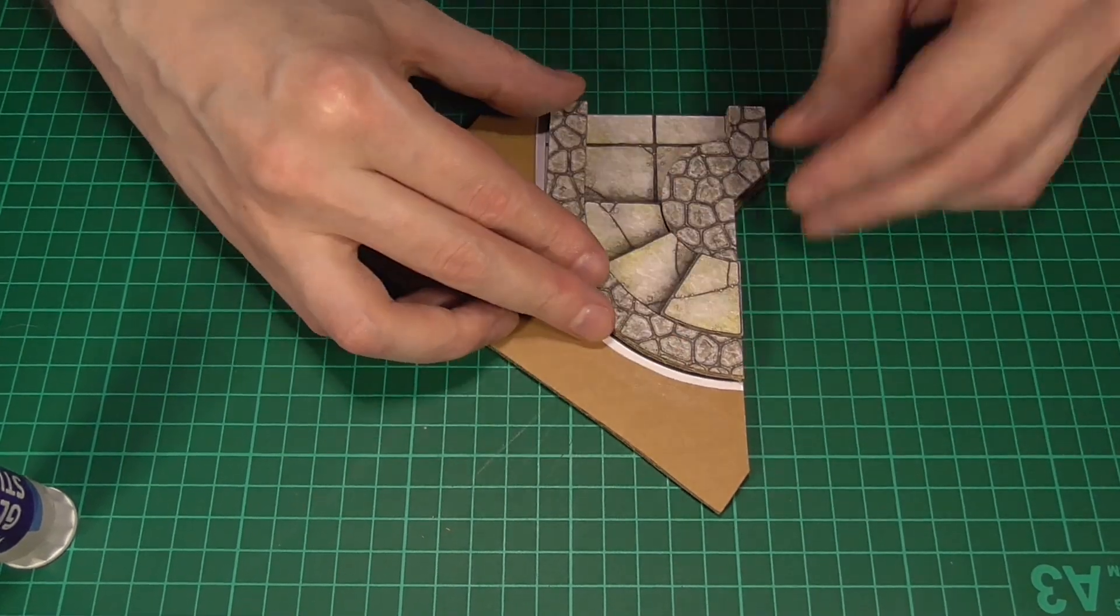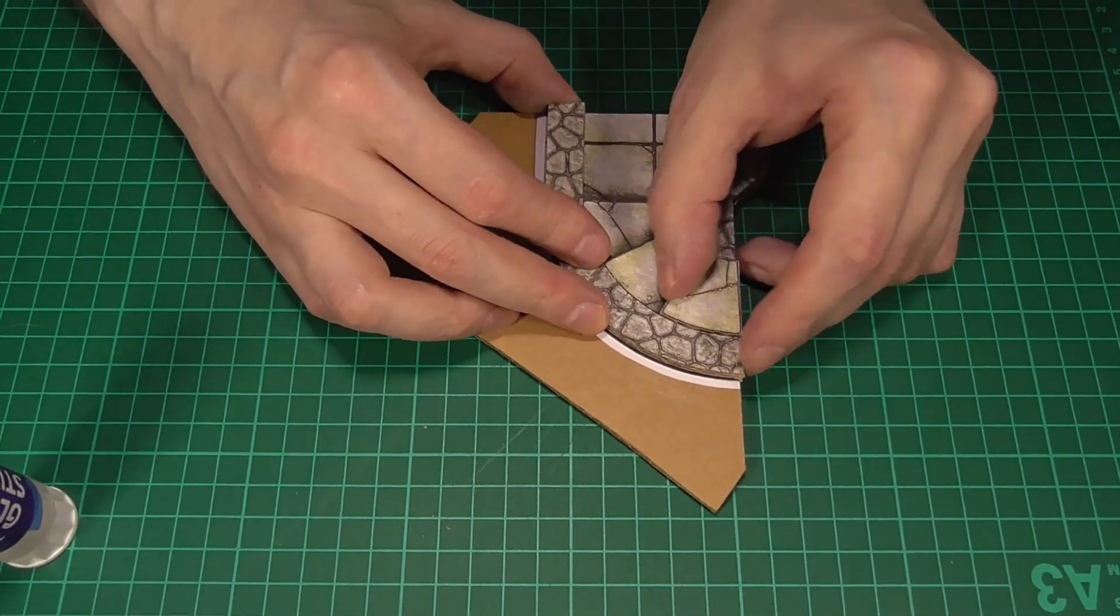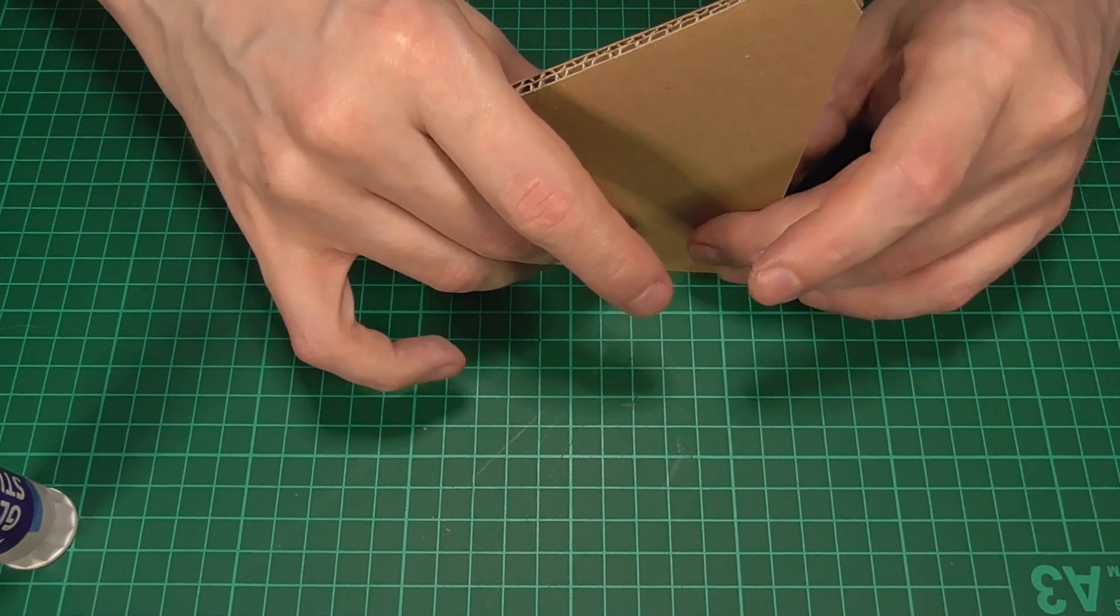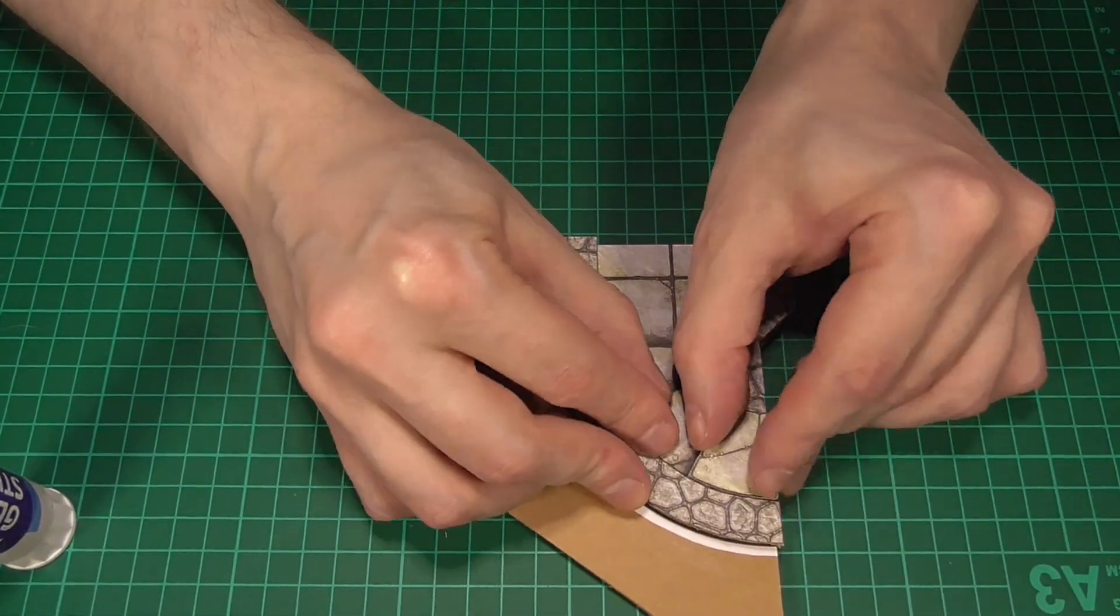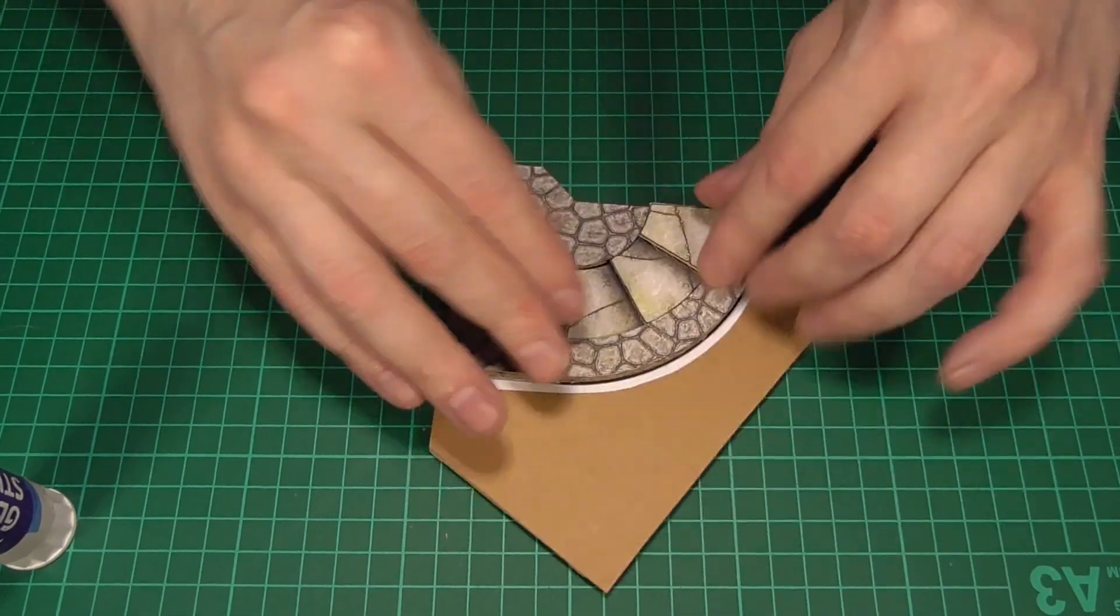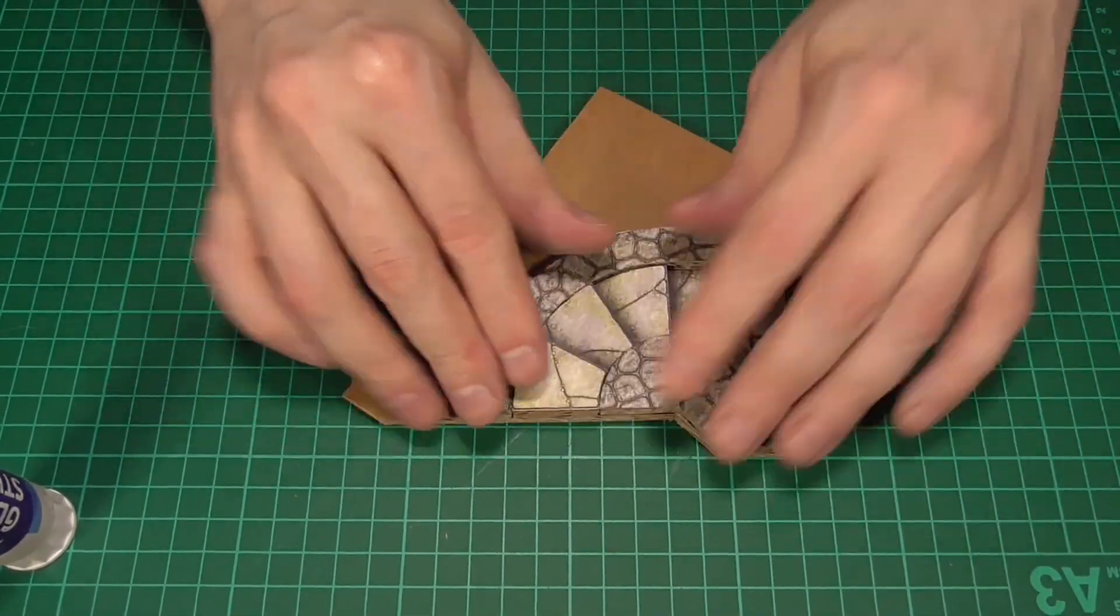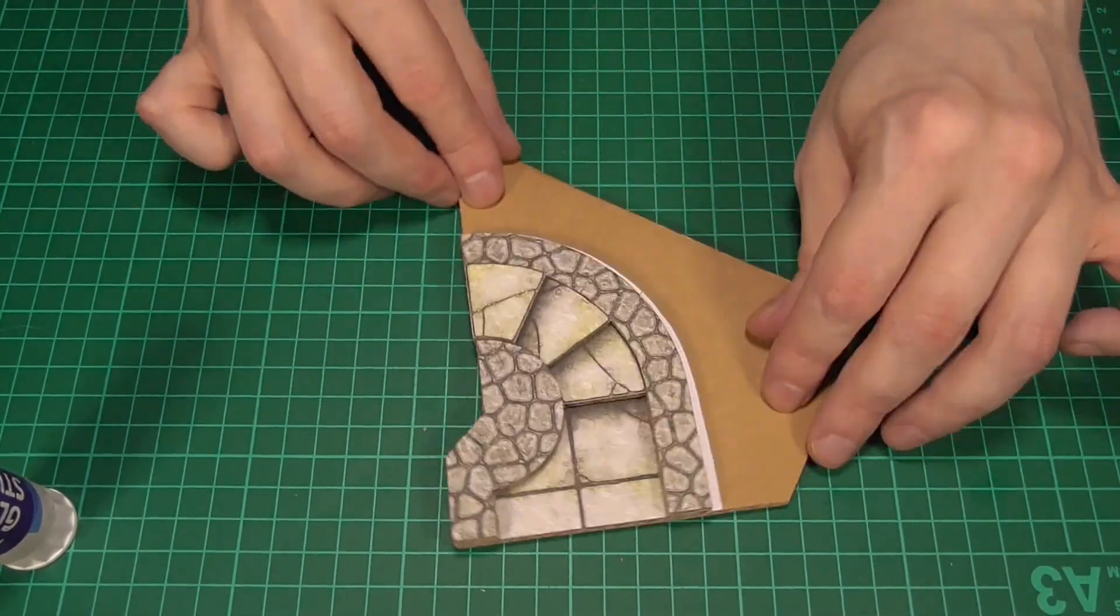Then I kind of push them together to get rid of any gaps and just to align things a bit better. And I'm also trying to make sure that the walls on either side of the two-inch wide exit at the bottom of the stairs, I want those to be flush with the edge of the floor tile itself, for obvious reasons.